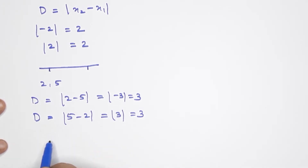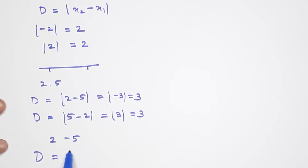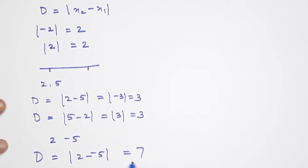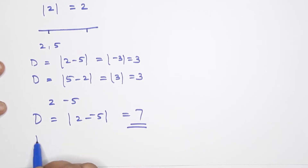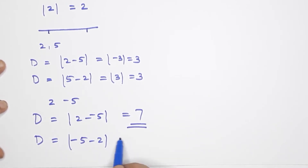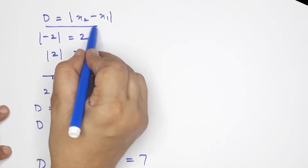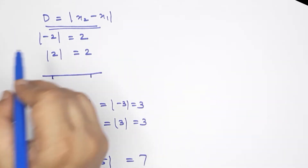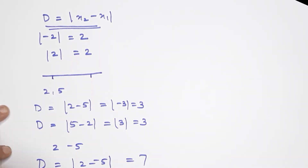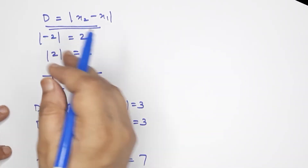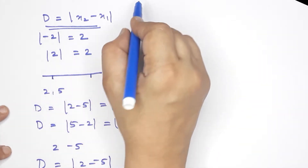Now consider 2 and negative 5. The distance we find is modulus of 2 minus negative 5, which gives modulus of 7, equaling 7. And modulus of negative 5 minus 2 gives modulus of negative 7, which is 7. So this formula is consistent. That's why we say modulus handles both negative and positive values.